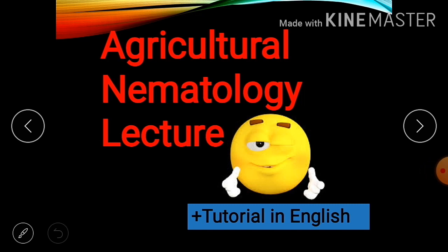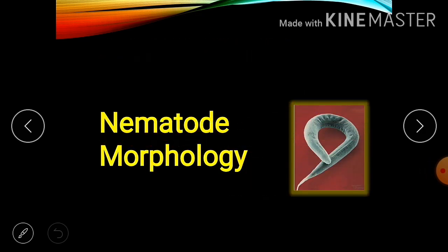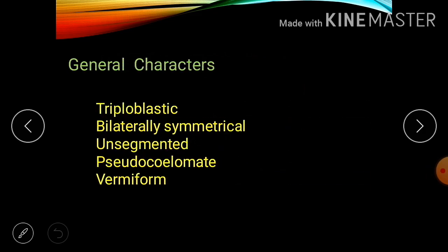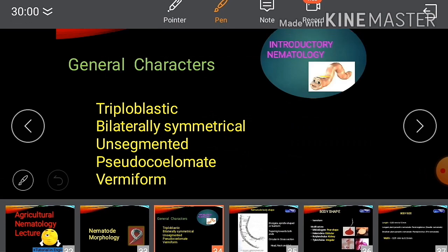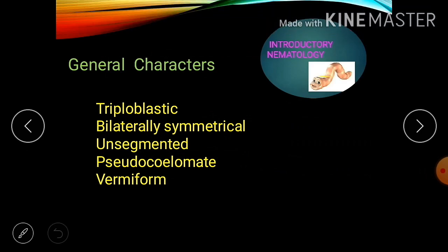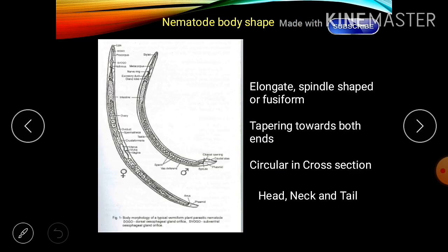Today's lecture is on nematode morphology. Nematodes possess general characters like triploblastic, bilaterally symmetrical, unsegmented, pseudocoelomic, and vermiform. For more details, click on my past video on introductory nematology. The general body shape is elongate, spindle-shaped, or fusiform, tapering towards both ends, circular in cross-section, with head, neck, and tail divisions.